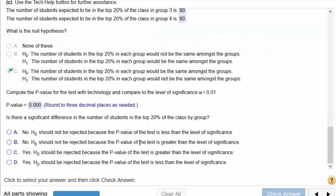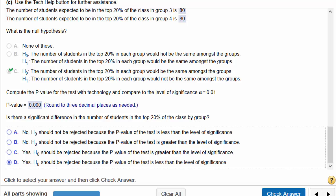And then finally, is there a significant difference? Yes, the null hypothesis should be rejected because the p-value is lower than the level of significance.